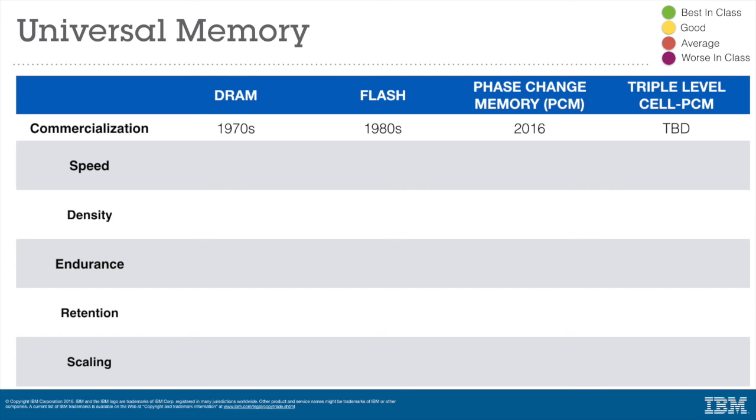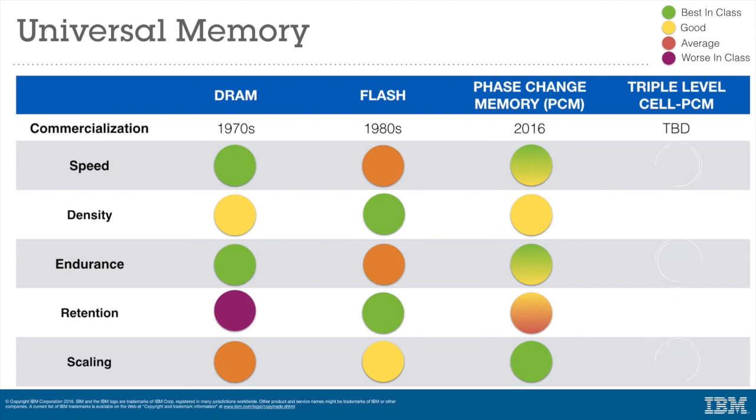Phase change memory is thought to be the first instantiation of universal memory because it possesses characteristics of both DRAM—it's fast, durable, and can be written millions of times—and flash memory, being scalable with the ability to store multiple bits per cell.